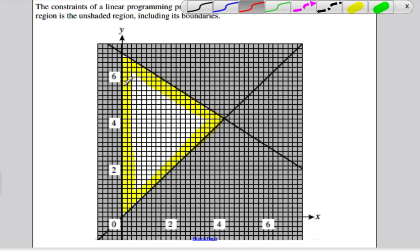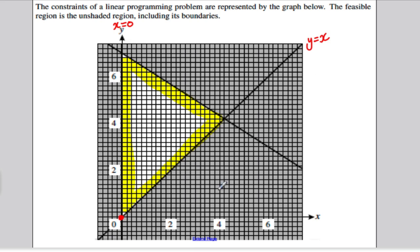So this line here is clearly the line X equals 0. That's a nice easy one. This line here, you can see as you go across one, you go up one. So it's got gradient 1 and it's going through the point 0,0. So this has equation Y equals X.